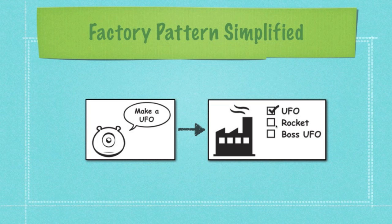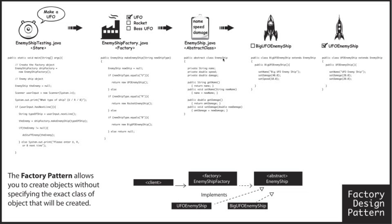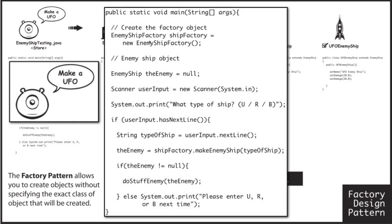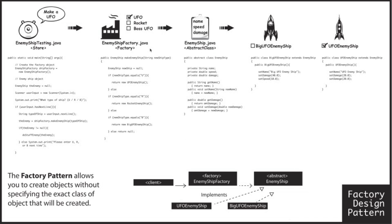Let's go back and look at the code. Here is the factory pattern — I'm going to zoom in on everything. The alien is asking for a UFO, the factory puts a check mark in the UFO box, spits out an abstract class, and those abstract classes create one of the different ships. Let's zoom in on the main application. This is the main application because it has public static void main. Basically, it asks for input from the user to enter a U, an R, or a B, then passes that information to the factory to make a ship. The type of ship is either U, R, or B, and that gets passed over to the factory.